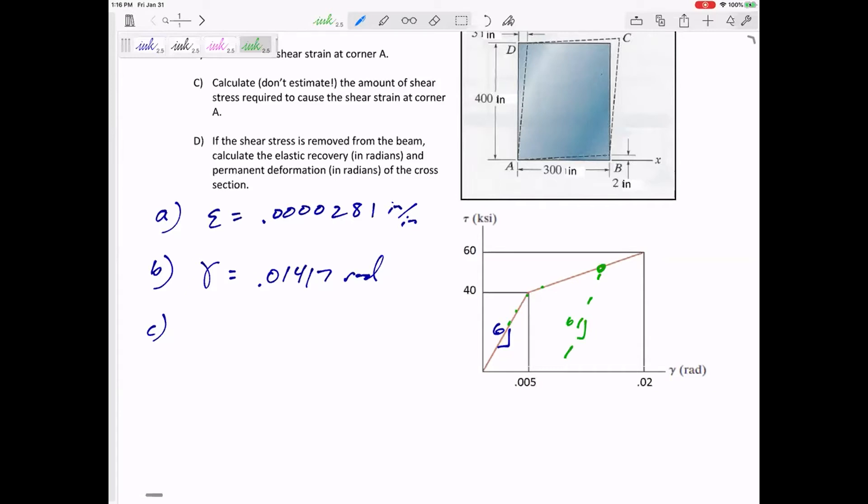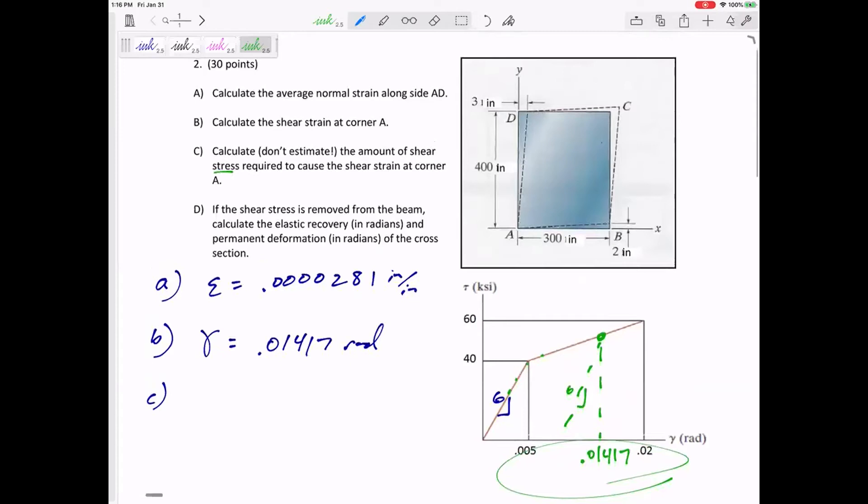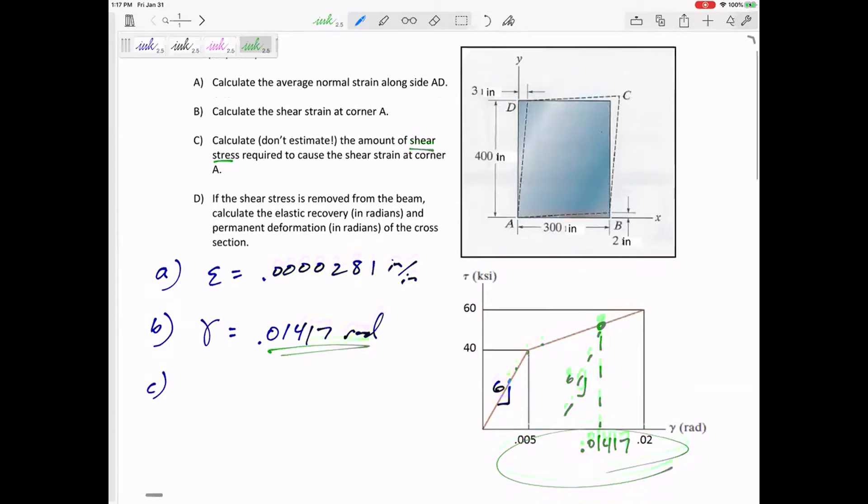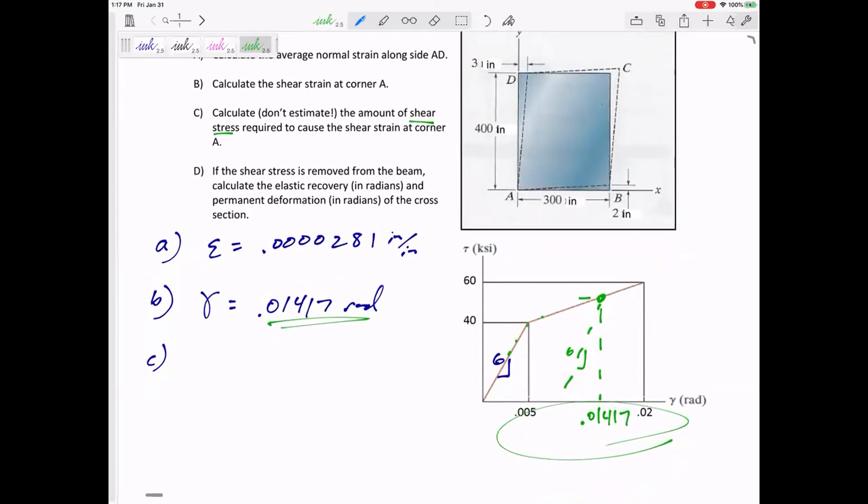Either we're going to be told the strain, which is this problem. I mean, not explicitly told it. We had to, from the figure, we were told the strain. So if we know the strain and we've got a stress-strain diagram, we can find the stress. So I think that's what part C is. Calculate the shear stress required to cause this strain in the figure of 0.01417. So if this value is 0.01417, question mark, what is the tau? What is the shear?